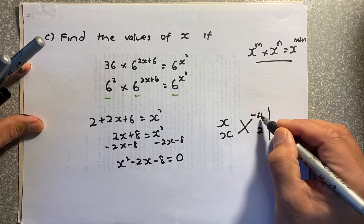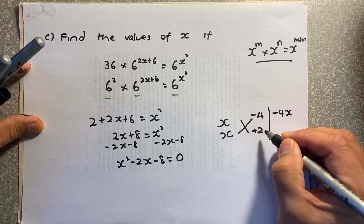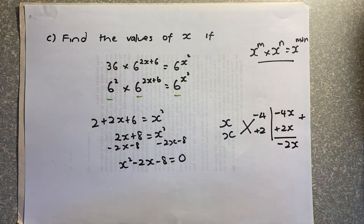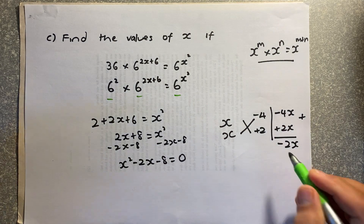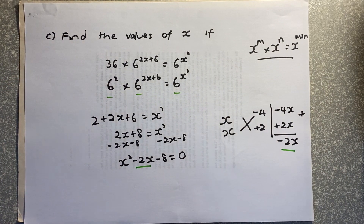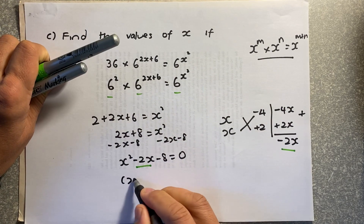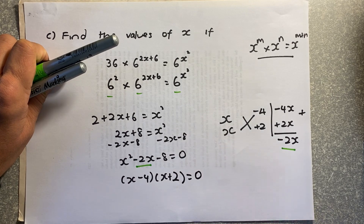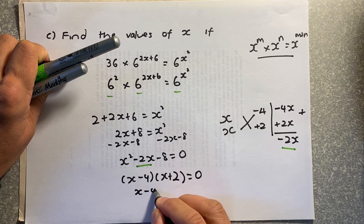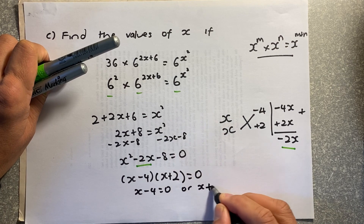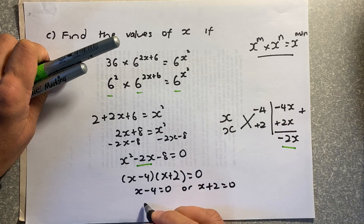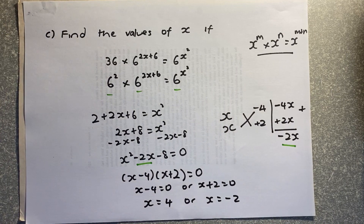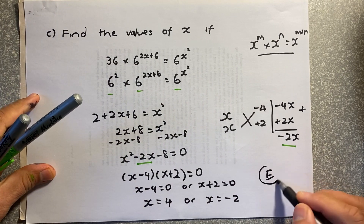Checking: x times −4 is −4x, and 2 times x is 2x. Adding gives −2x, which matches. The factorized form is (x − 4)(x + 2) = 0. Solving: x − 4 = 0 gives x = 4, and x + 2 = 0 gives x = −2. That is an excellence in this paper.